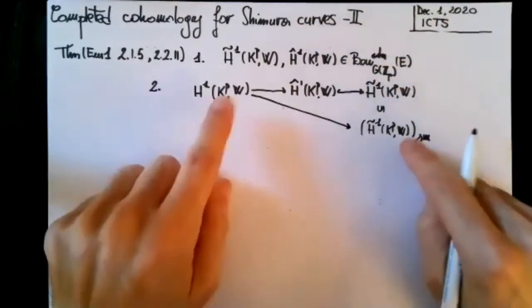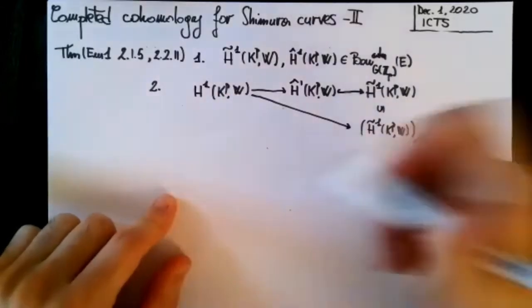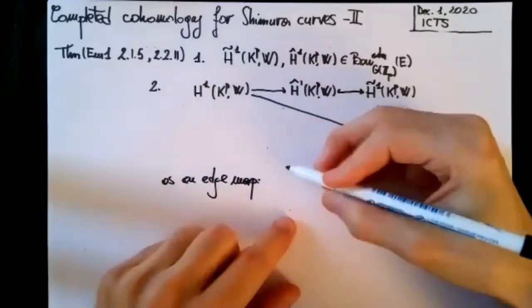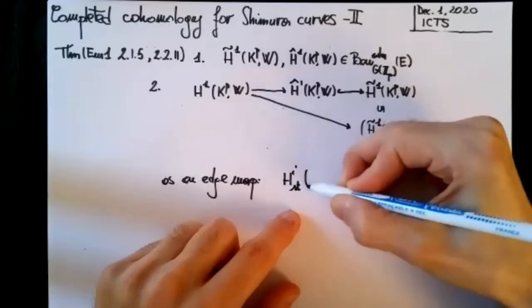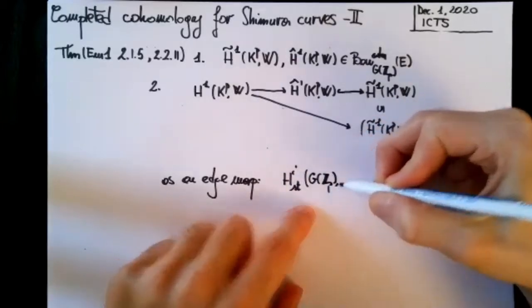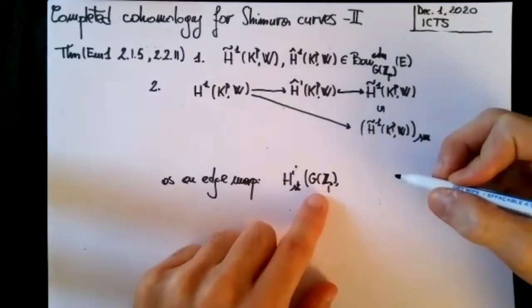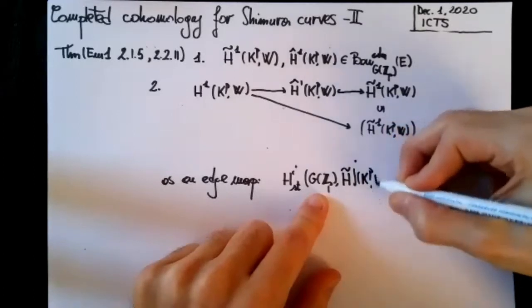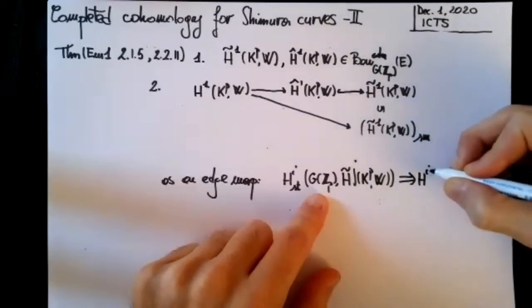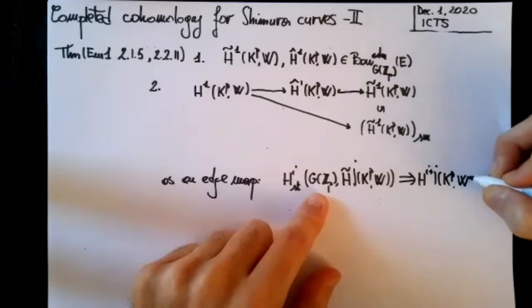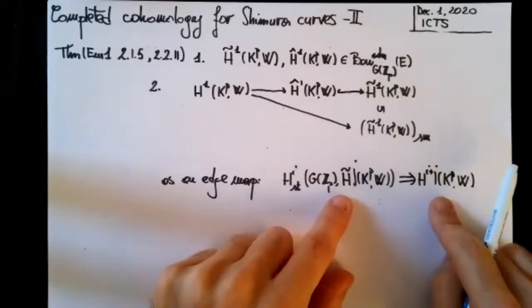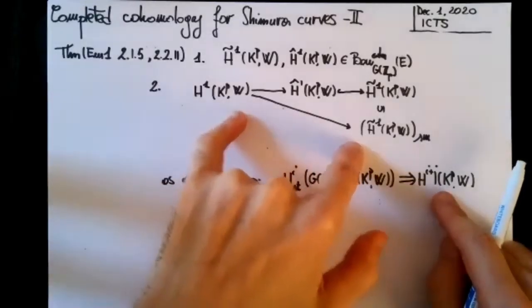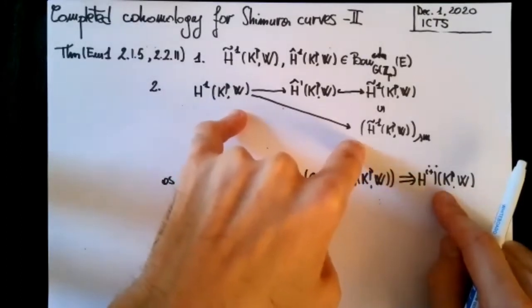Since we are working in this particular case of a compact Shimura curve, it's possible to prove that actually this is an isomorphism. This is very specific to our situation of working with compact Shimura curves. This map factorizes through the smooth vectors. The map comes from an edge map from a spectral sequence. This spectral sequence converges to H^{i+j}(K^p, W) and works in great generality for arithmetic quotients, but the isomorphism is extremely specific to Shimura curves.